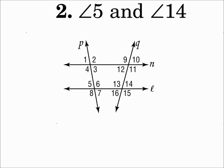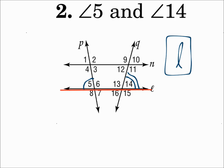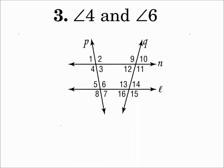Number 2: angle 5 and angle 14. The line that touches both angles is line L, so L is the transversal. Number 3: angle 4 and angle 6. The line that touches both of those is line P, so P is the transversal. Remember, if you're not sure, trace over the lines until you find the one that touches both angles.